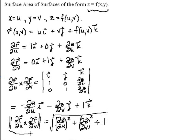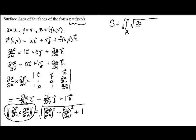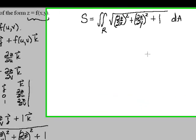So instead of having to calculate the determinant and the norm every time, if we have functions in this format, we can skip to a new formula for the surface area: S equals the double integral over R of the square root of (∂z/∂x)² plus (∂z/∂y)² plus 1 dA. Let's work on a problem where we use this shortcut.